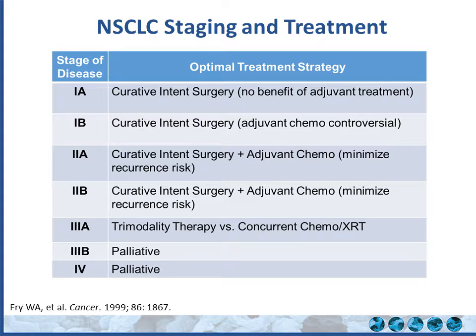Stage 1A and 1B are usually treated with surgery. Stage 2A and 2B are also treated with surgery, but there's evidence that adjuvant chemotherapy can improve survival — so they get surgery followed by adjuvant chemotherapy. Stage 3A is sort of the last stage where surgery may be offered; some patients get neoadjuvant chemoradiation followed by surgery. And finally, 3B and 4 are treated with systemic chemotherapy and radiation therapy as appropriate.